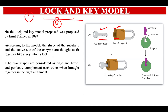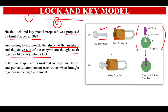This model was proposed by Emil Fischer in 1894. According to this model, the shape of the substrate and the active site of the enzyme are thought to fit together just like a key fits into its lock. As you can see in this figure, this is the enzyme, this is the active site of the enzyme — the substrate that has to bind to this active site needs to have a shape complementary to the shape of the active site. When it binds like that, catalysis takes place and the products are formed.